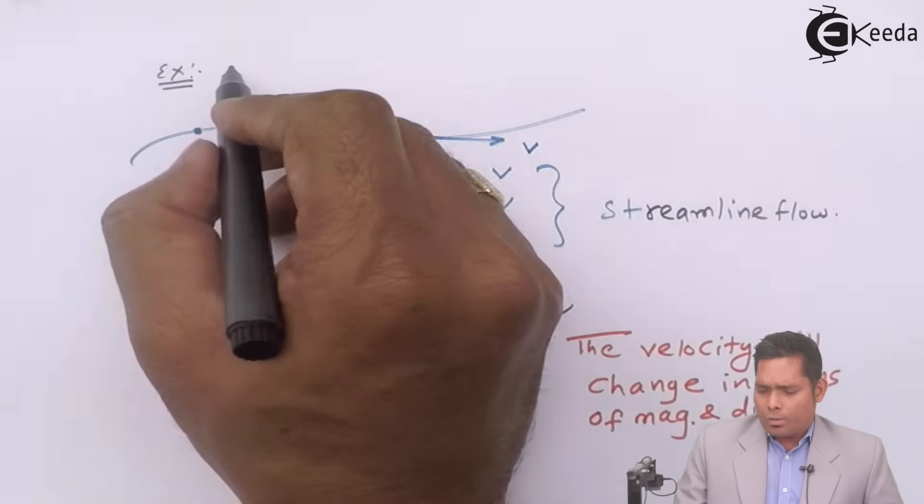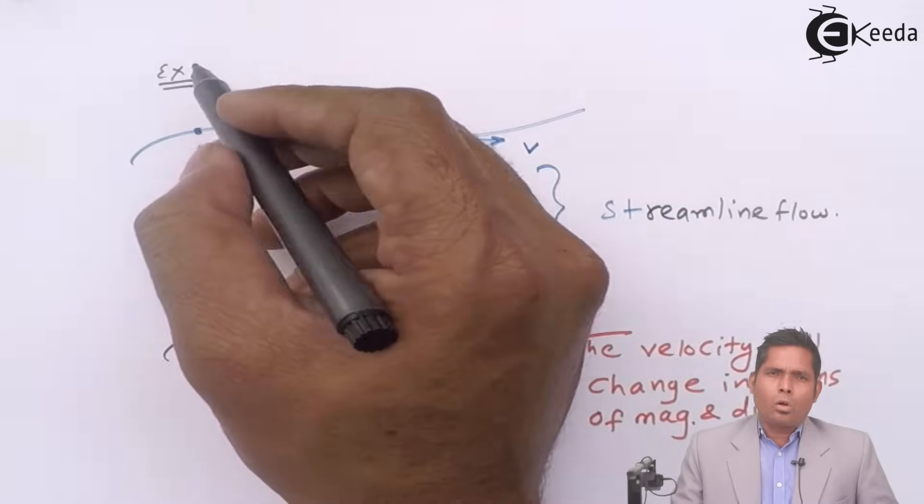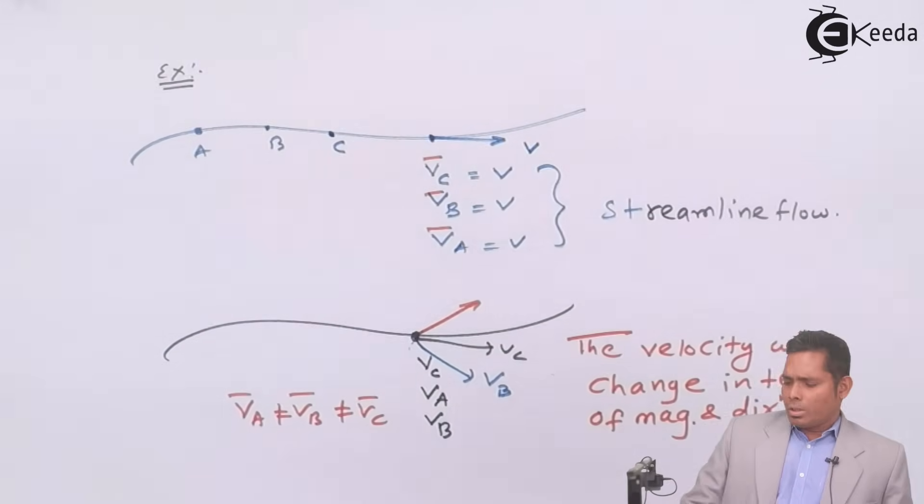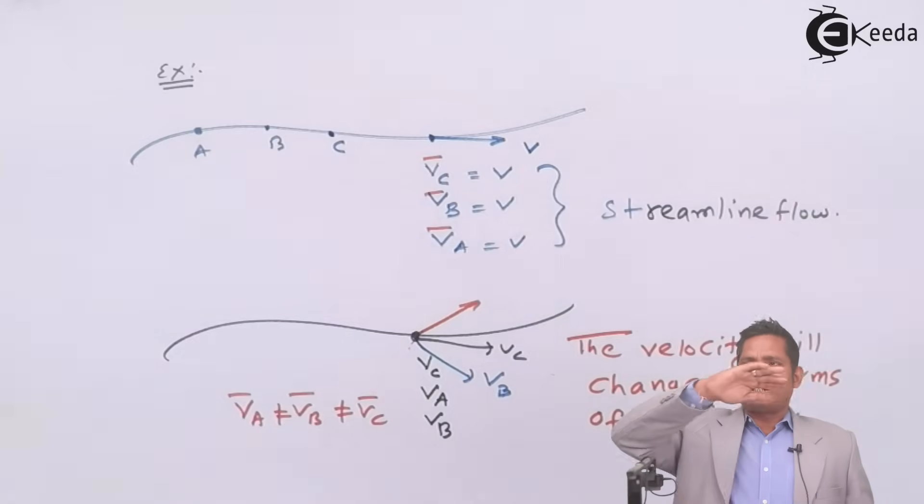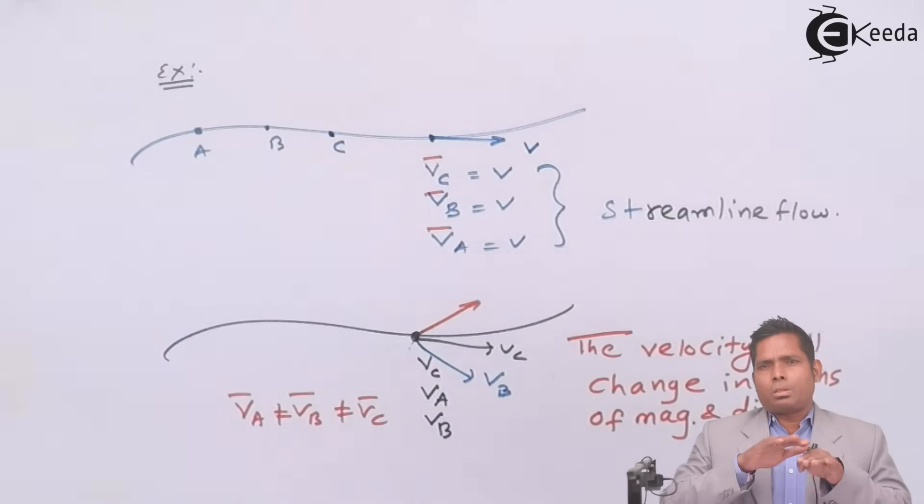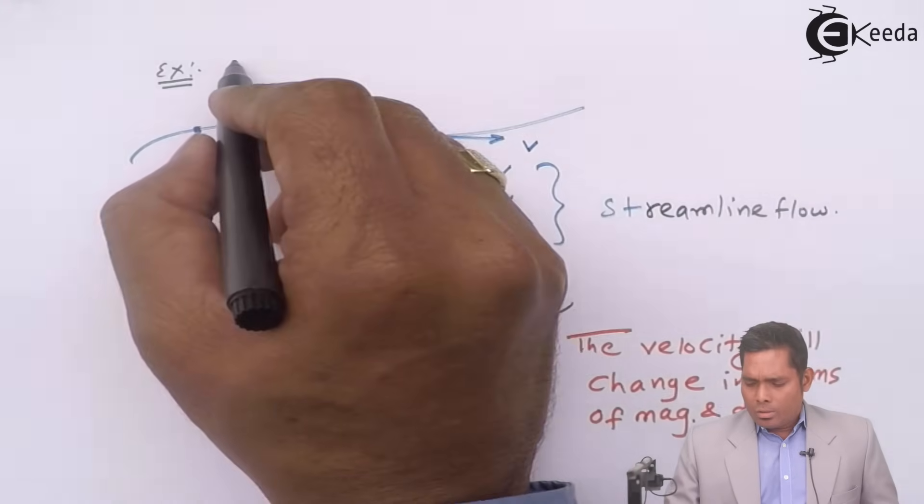Example: you can take the example of turbulent flow, in case of smooth flow of water in a river in normal days, the flow is very smooth and that is streamline flow. But when the speed of the water increases and it increases too much in case of flood.